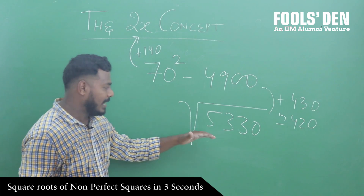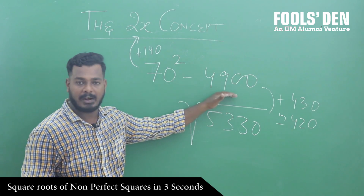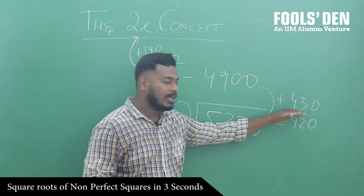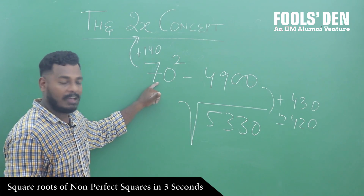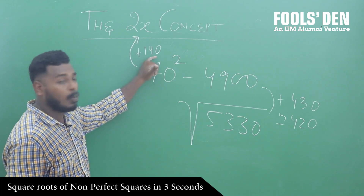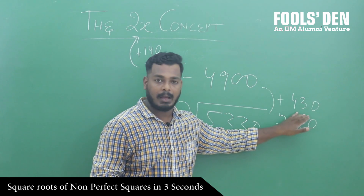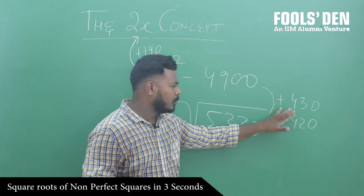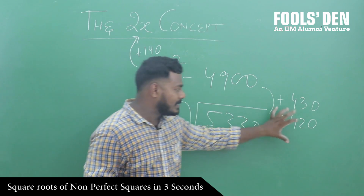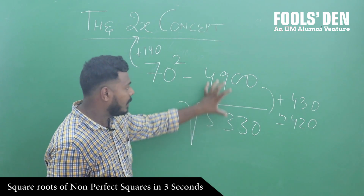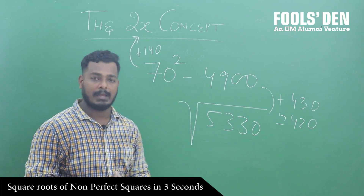Let's go to our next example: finding the square root of 5330. इसके पास 70 का square 4900 होता है, और इसमें और इसमें जो difference है, that is approximately 430. Using the 2x concept, 70 से जब हम आगे बढ़ेंगे, तो every next square will increase by 70 का double, 140. अब 140 को कितनी बार लेंगे तो करीबन 430 आएगा — 140 into 3 is 420, जो approximately 430 है. So इसका square root होगा approximately 73.